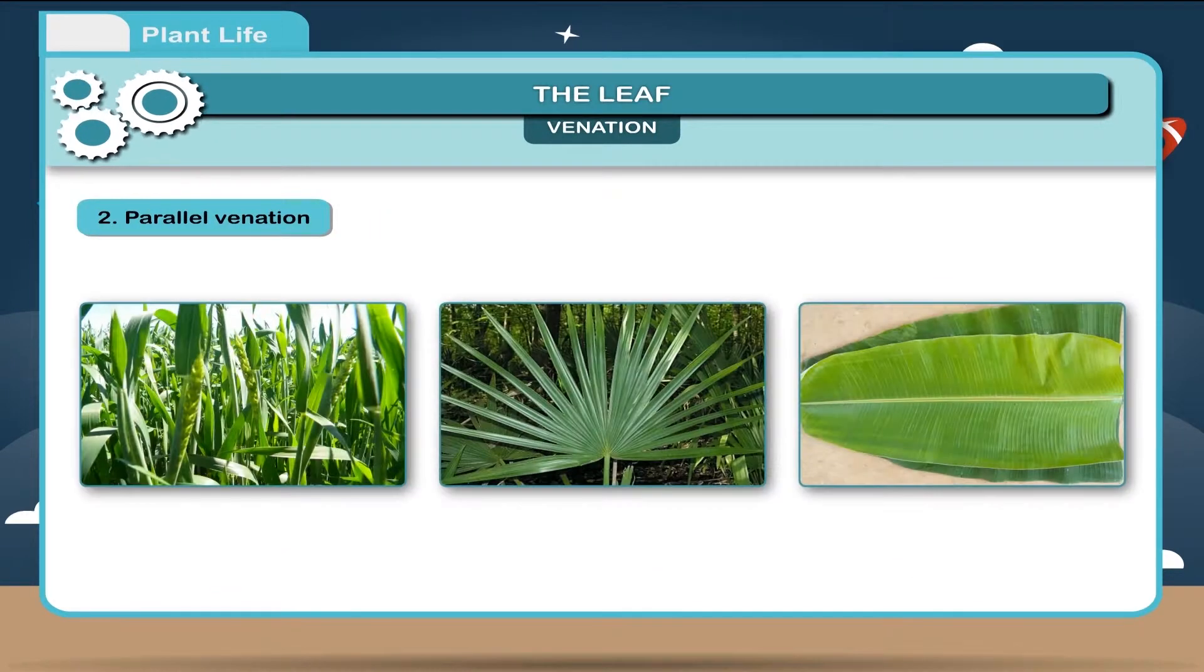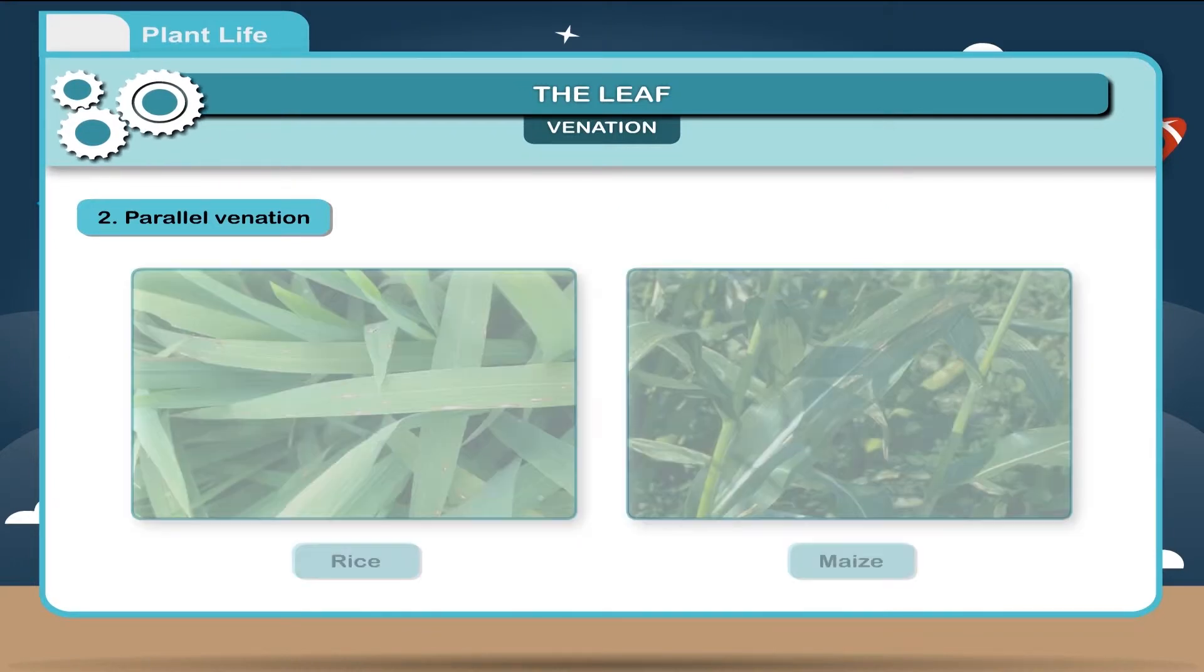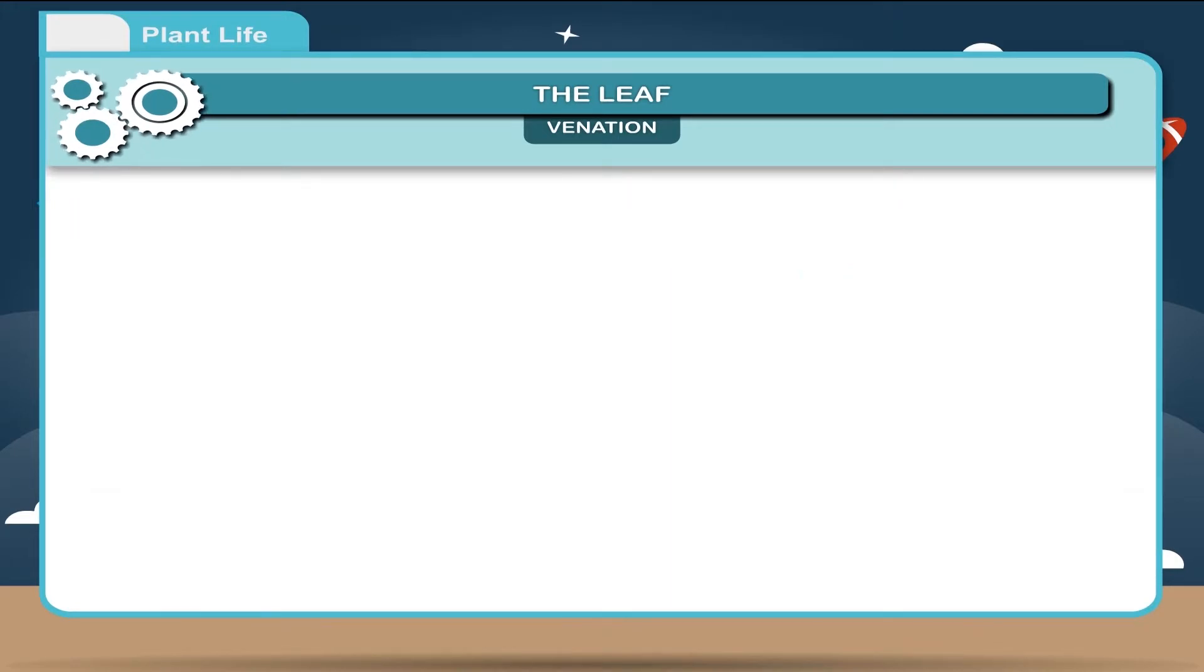Parallel venation. When veins run parallel to each other from base to apex in the leaf blade, it is called parallel venation. Leaves of wheat, palm, banana, rice and maize have parallel venation.